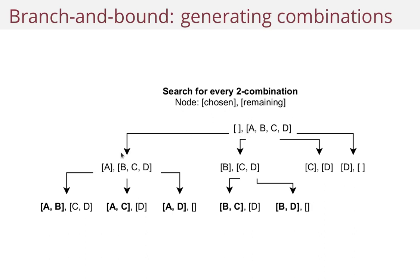So here you remove A, and here you remove A and B, and so forth. The reason you do that is because you don't want to end up with both AB and AC, because the order doesn't matter.